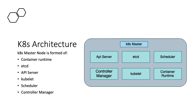Container runtime — in this case Docker — is the software used to run containers. The kubelet is the agent running on each node in the cluster. It is responsible for making sure the node is running as expected, detecting the health and status of the node. If something is failing or not going right, the kubelet communicates this information to the controller manager, which then takes action.